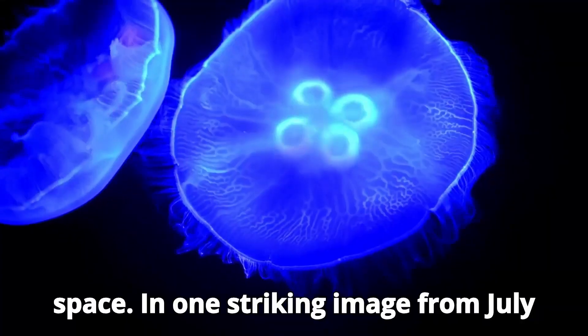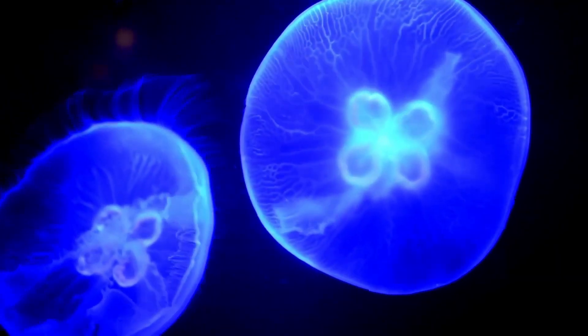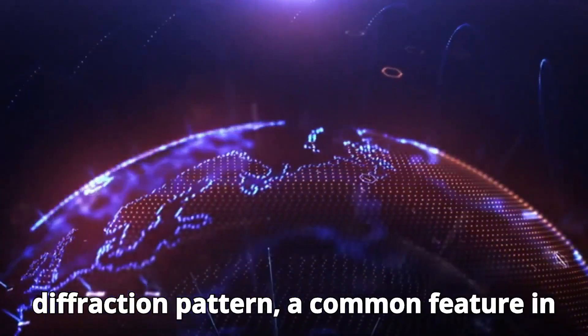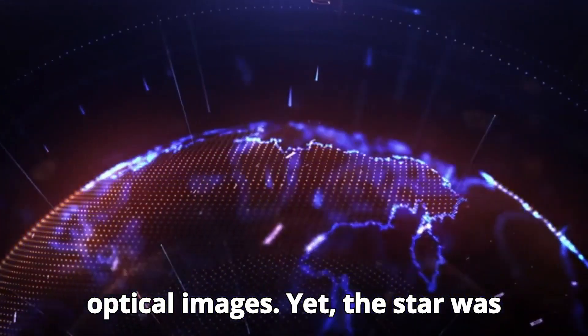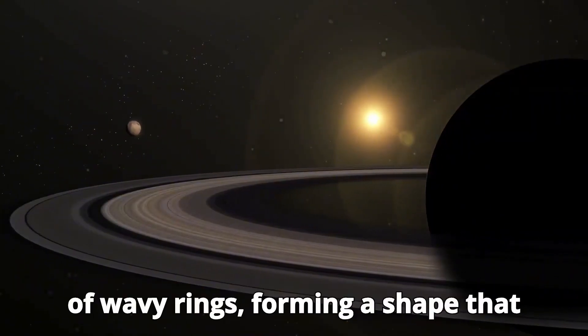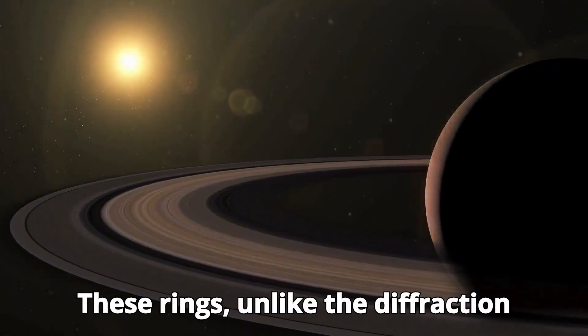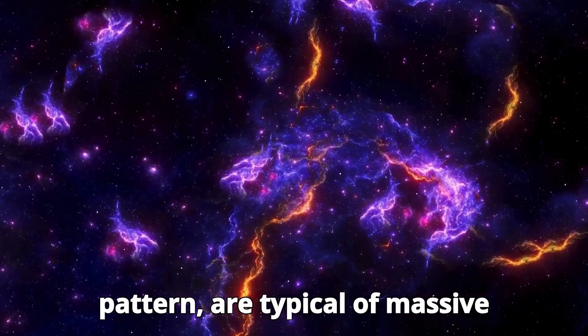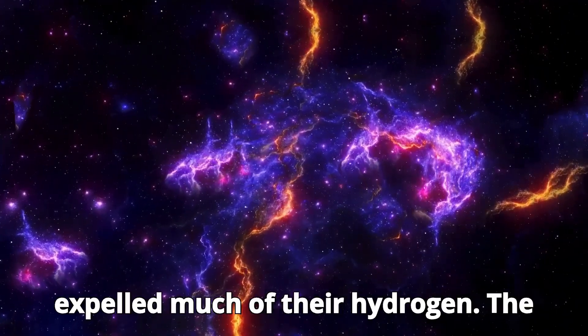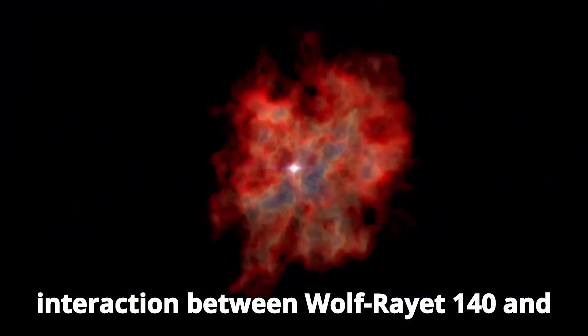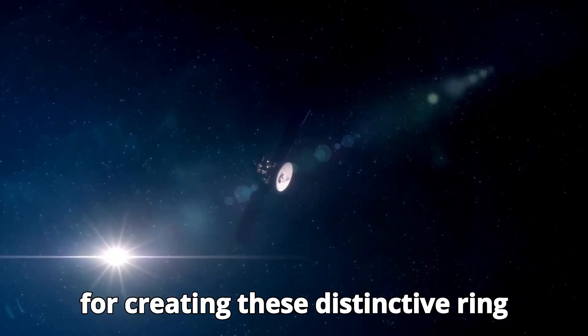In one striking image from July last year, the Webb telescope captured a distant star, Wolf-Rayet 140. This image revealed a recognizable diffraction pattern, a common feature in optical images. Yet the star was also surrounded by an unusual arrangement of wavy rings, forming a shape that resembles a slightly squared pattern. These rings, unlike the diffraction pattern, are typical of massive Wolf-Rayet stars, which are in the final stages of their life and have already expelled much of their hydrogen. The interaction between Wolf-Rayet 140 and its smaller companion star is responsible for creating these distinctive ring structures.